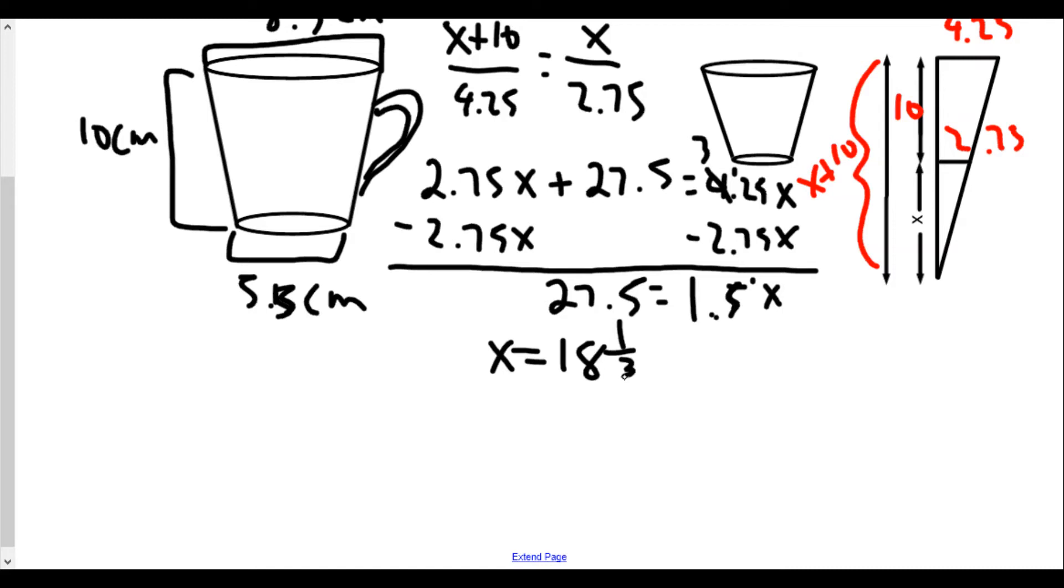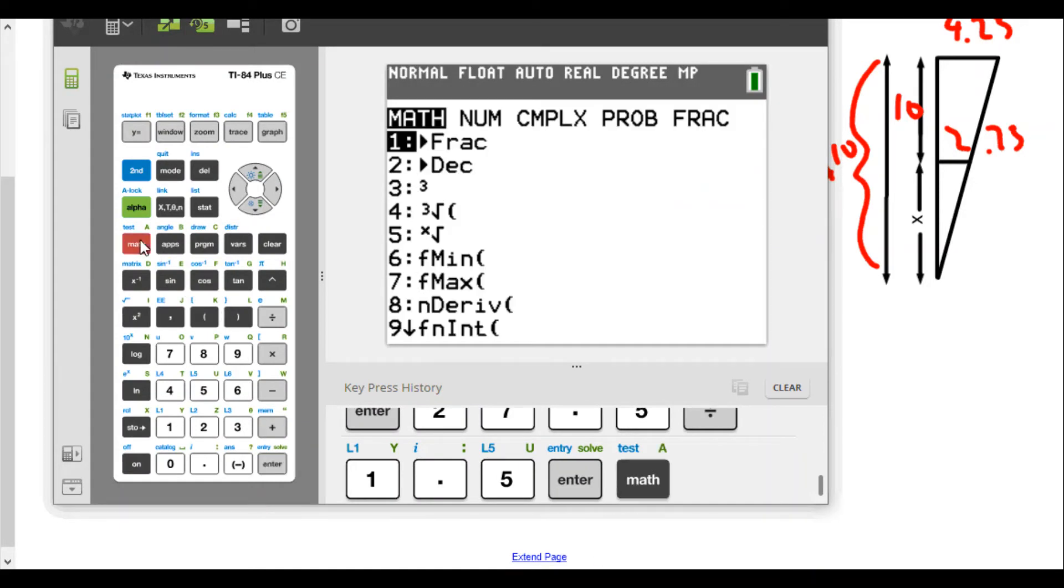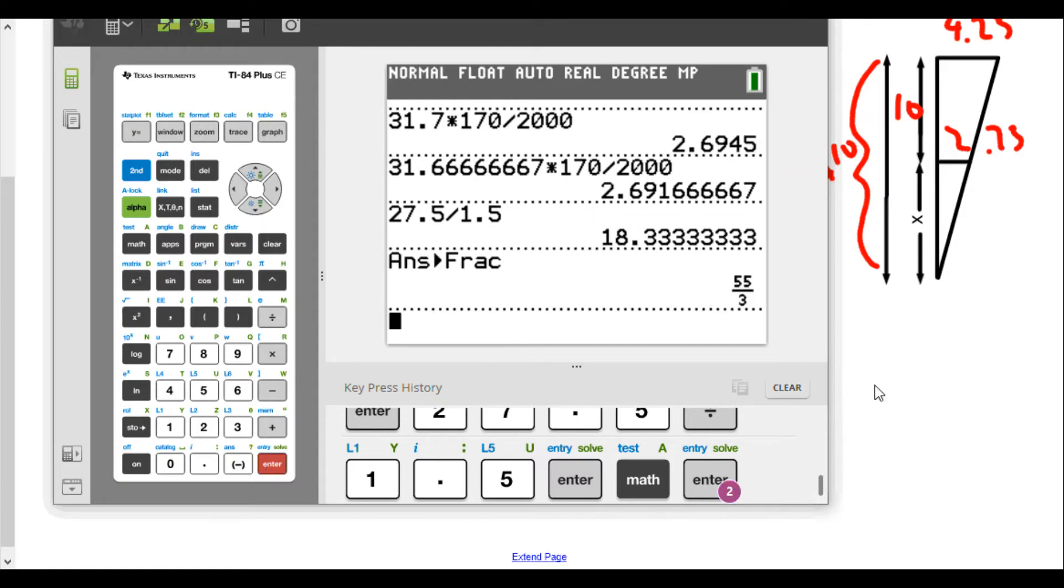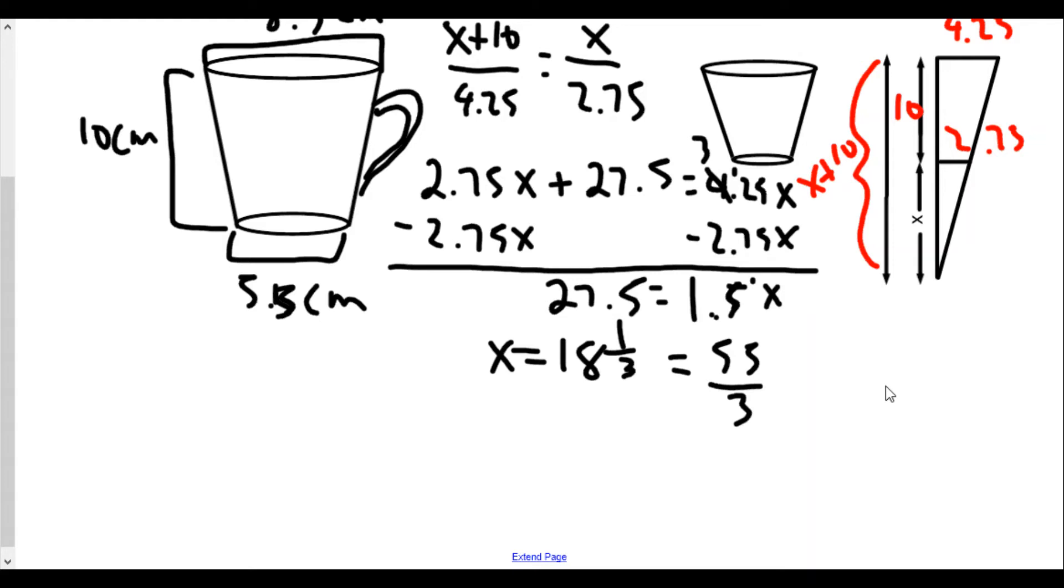I'll bring up the calculator and do 27.5 divided by 1.5, and we get 18 and a third. So x equals 18 and a third. I'm going to leave it as 18 and a third, or 55 over 3. You can figure this out on the calculator - hit the math button, hit enter twice, and it'll change a repeating decimal into a fraction. Why am I using the exact value? I like using the value we have as closely as possible.